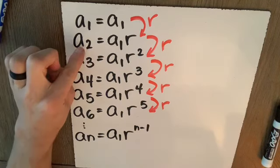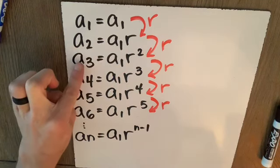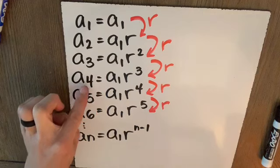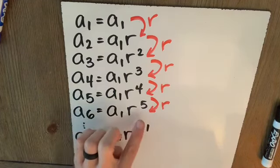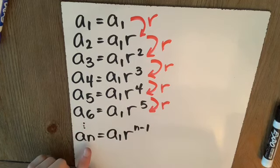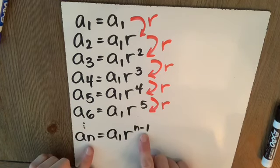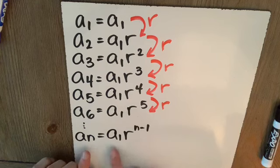If you can follow me to there, look, a2 has one r. a3 has two r's. a4 has three r's. a5 has four r's. a6 has five r's. aN is going to have one less number of r's. So that's how we came up with this formula.